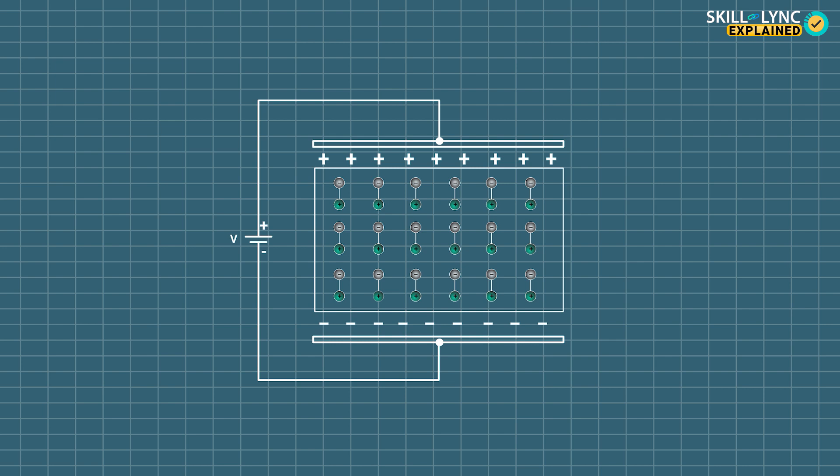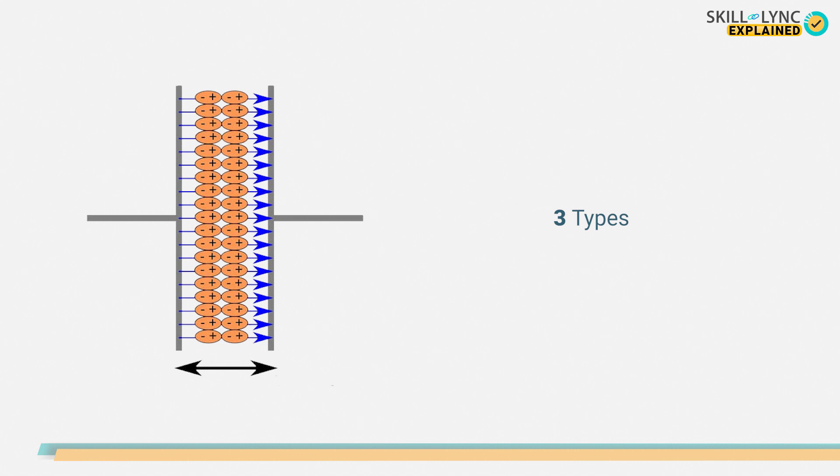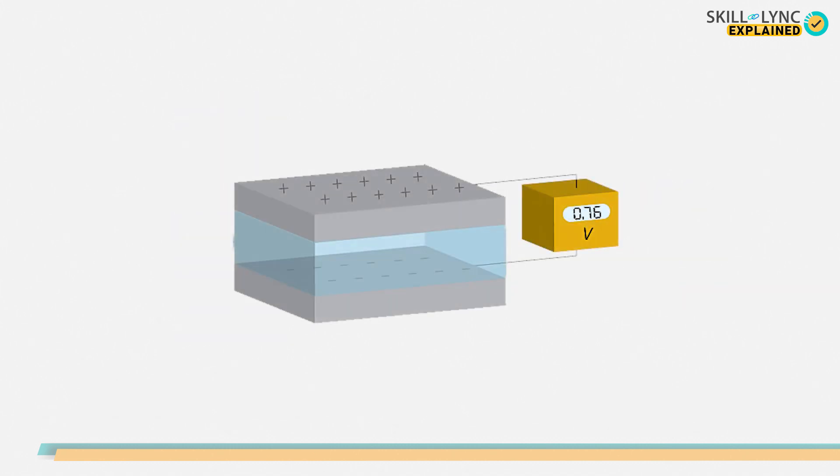The process by which the dipoles in the dielectric align themselves when an electric field is applied is known as polarization. Polarization is of three types: they are electronic polarization, ionic polarization, and orientation polarization. A dielectric material exhibits at least any one of these three types.